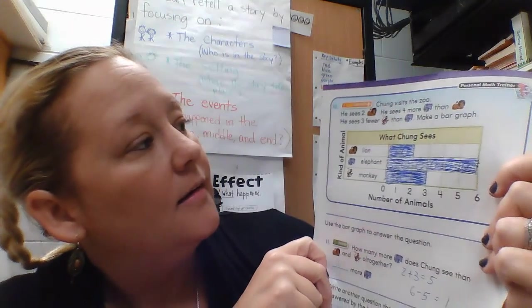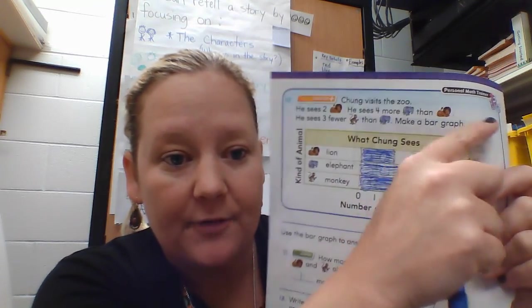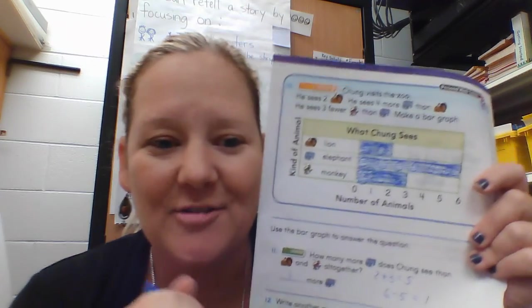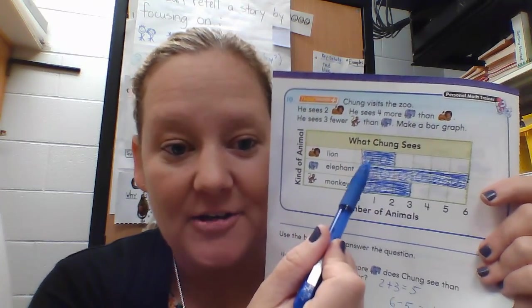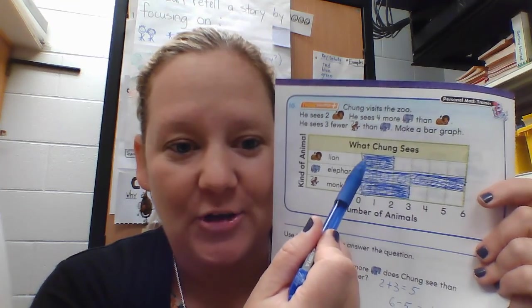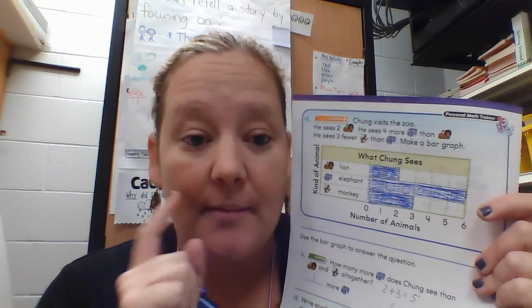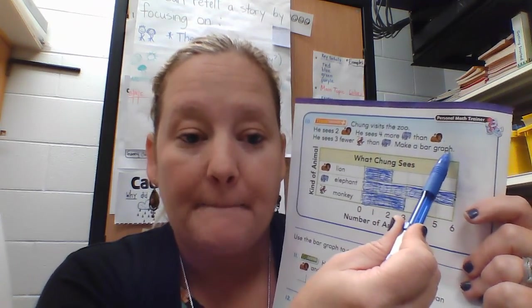Number ten: we have to look at this information and create a bar graph. When I first read it I originally started drawing a picture graph — you can see the little circles I started drawing — then I went back and realized I made a mistake. They want us to make a bar graph, so we have to make sure we're following those directions.